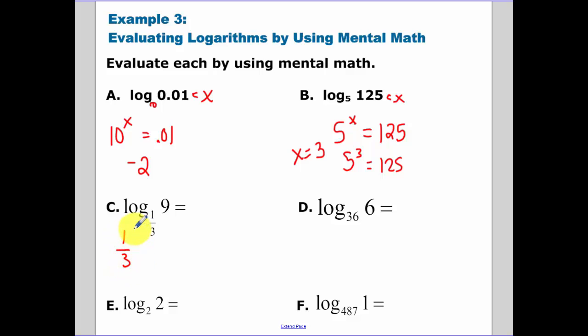1 third to what power gets me 9? Write them both in the same power. So 1 third is 3 to the negative 1. Let's make x our variable equal to 3 squared. So we set negative 1x equal to 2. So therefore here, our x is equal to negative 2. Or our logarithm equals negative 2.